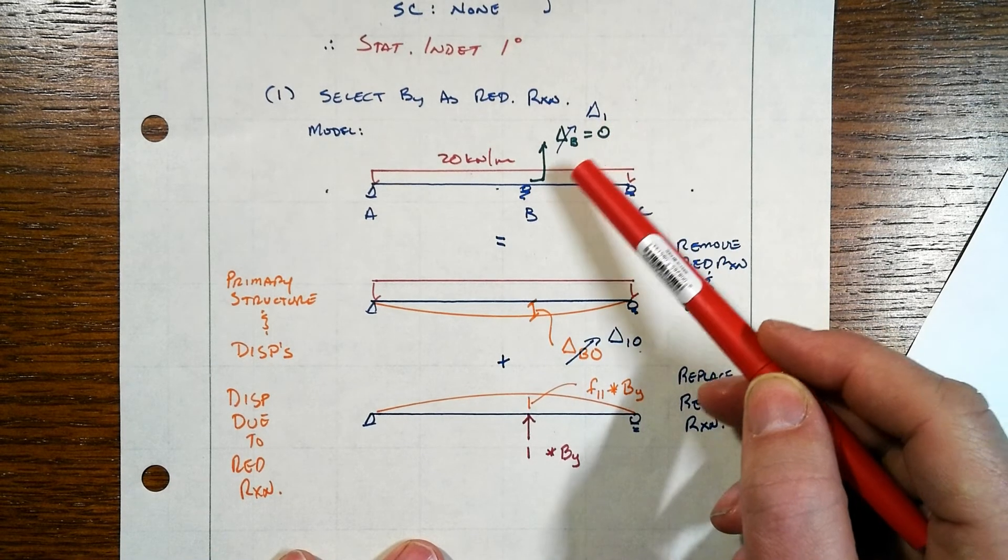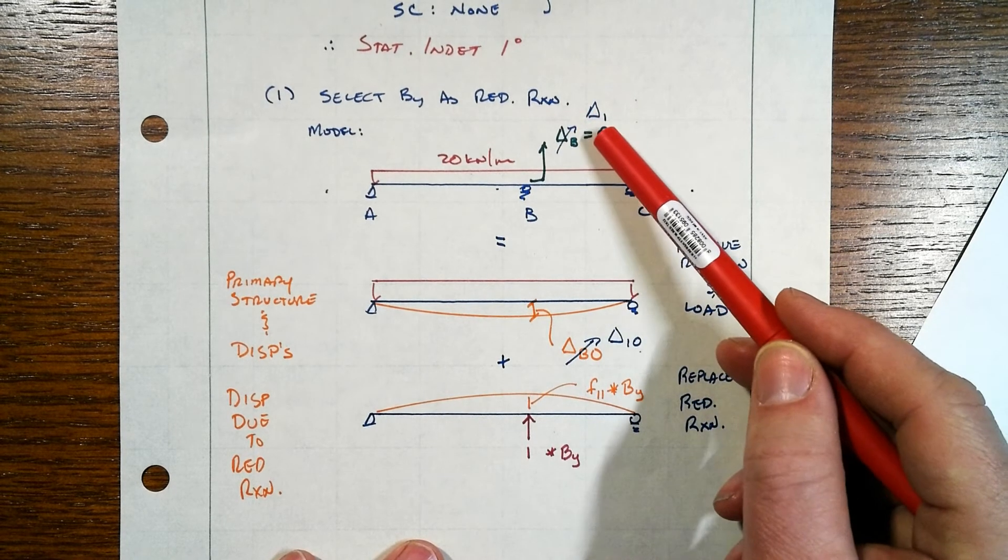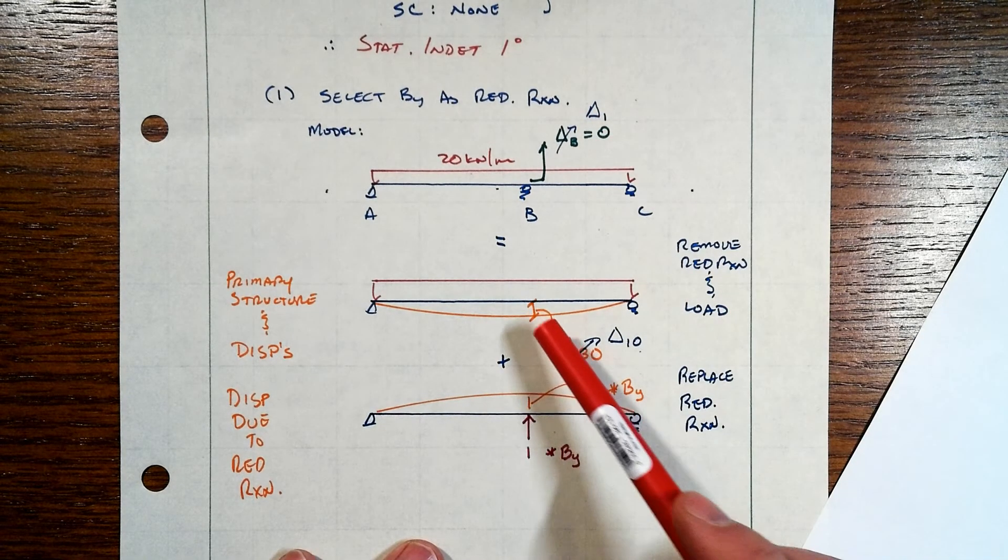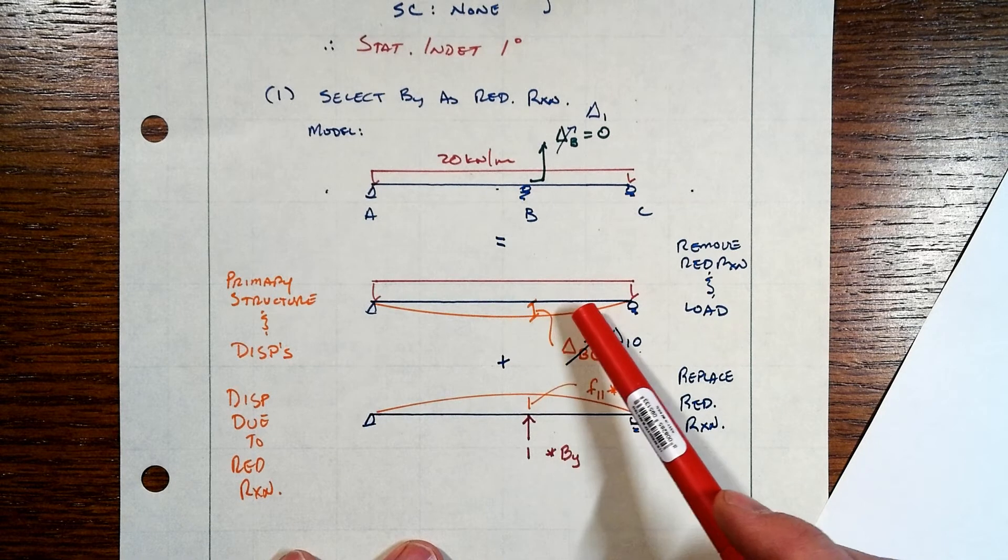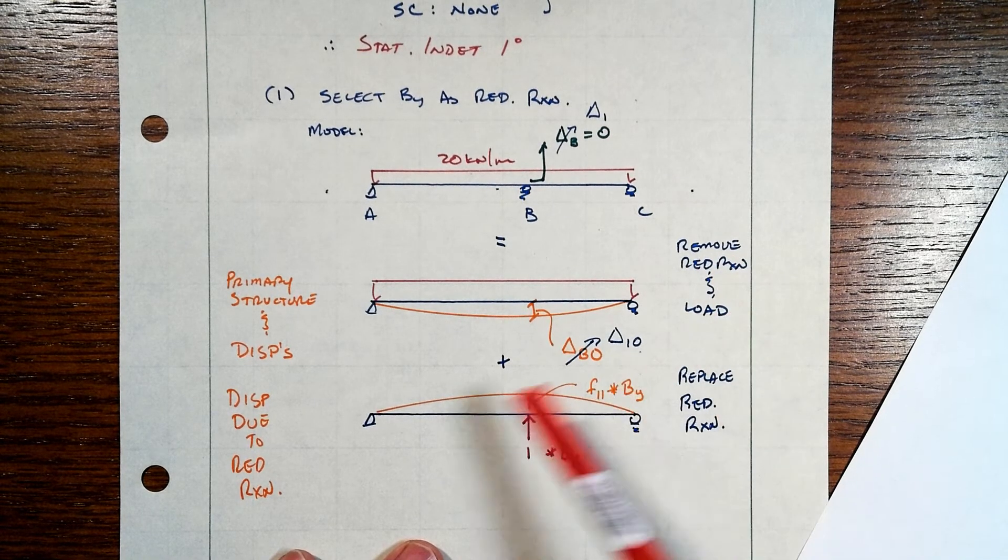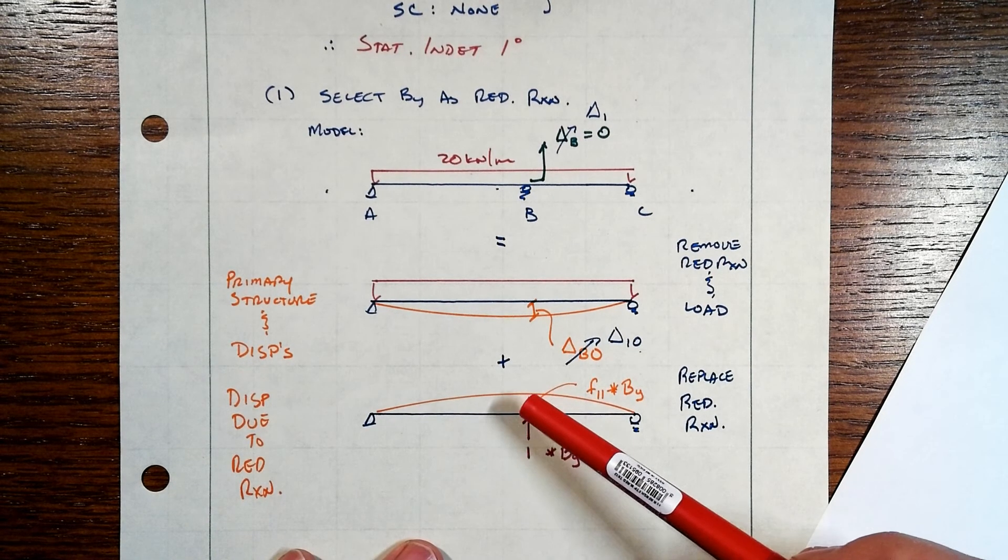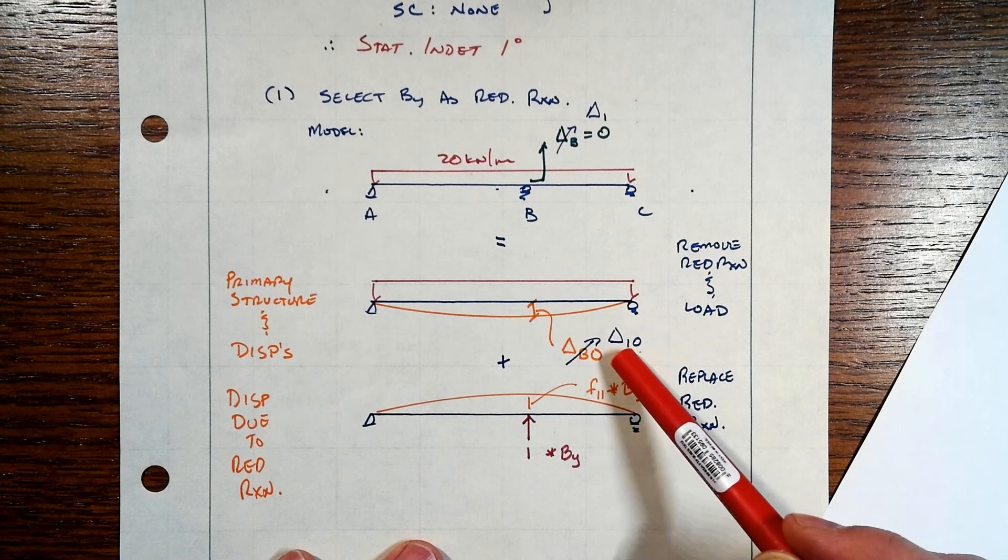We don't have to. But note what this means here. Delta B is equal to zero. That becomes delta one equals zero in the original one. Right? Now, this deflection that happens after we remove the redundant reaction and apply the actual load, that's called the primary structure with the primary displacements, as in the displacements due to the actual loads. We call that delta one zero.